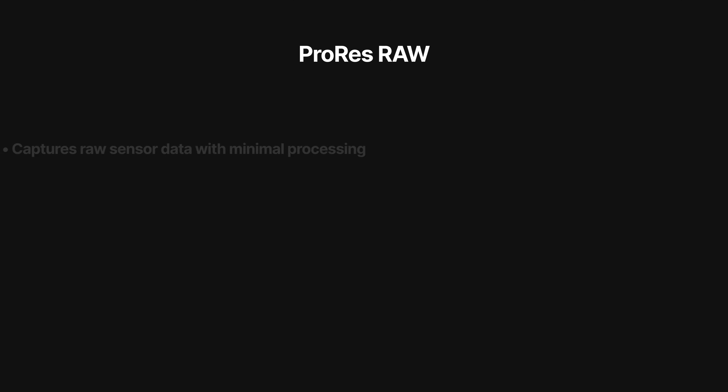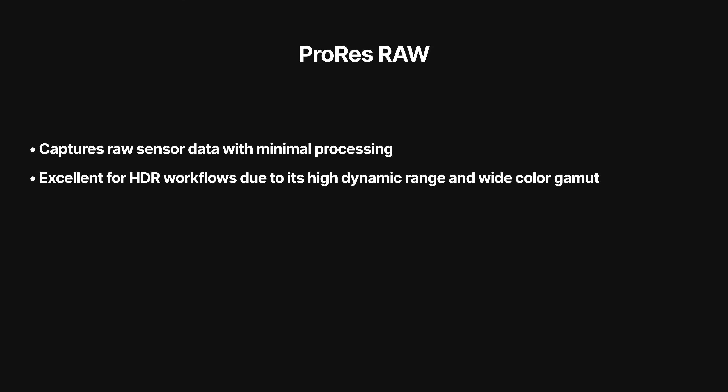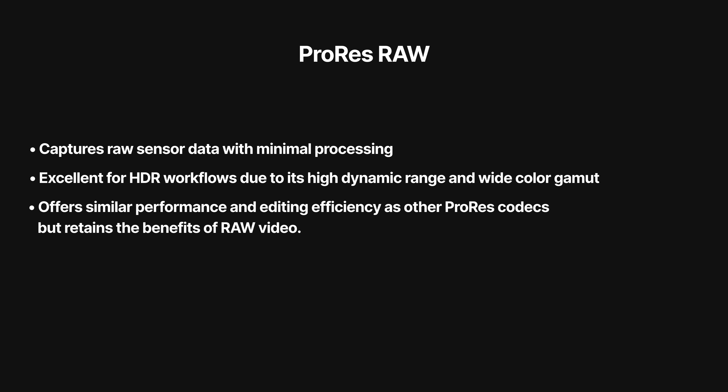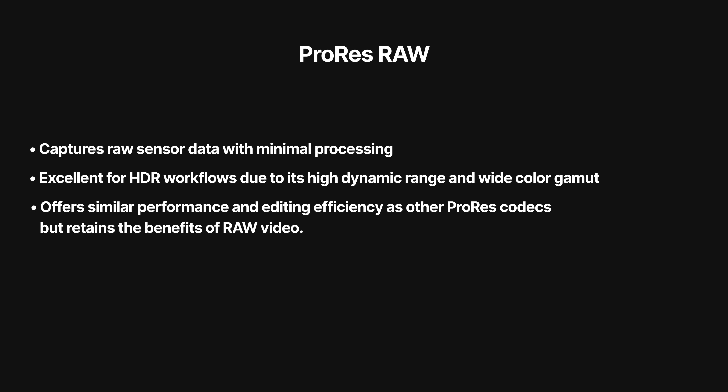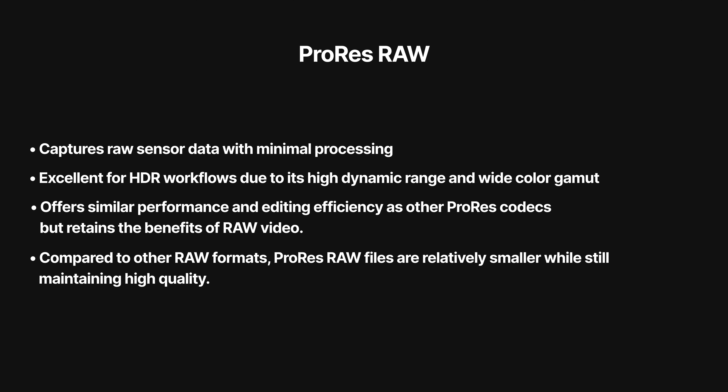One thing we didn't talk about yet is ProRes RAW. This is a capture format that some high-end cameras and capture devices offer. It captures raw sensor data from your camera with minimal processing, giving you maximum flexibility in post-production. It's a great codec for color grading and HDR workflows, basically offering you the smooth performance of ProRes codecs with the benefits of working with RAW video. The file sizes are higher compared to standard ProRes files, but compared to true RAW formats, they're smaller while still maintaining very high quality.